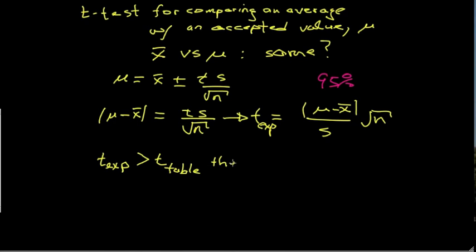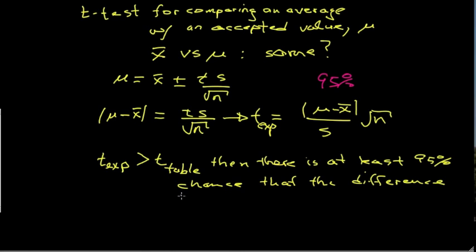then there is at least a 95% chance that the difference is significant, or is a systematic one. In other words, more likely that this is due to a real difference and not just random error operating.